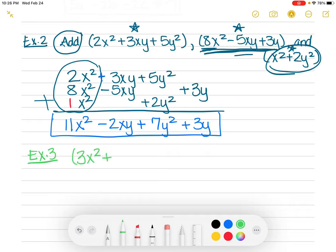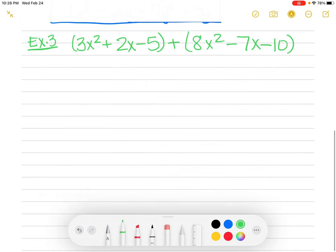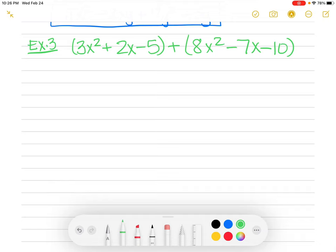3x squared plus 2x minus 5. And we're going to add to that 8x squared minus 7x minus 10. Again, make sure that you add up the like terms. The ones that are the same, add those up. So put them one on top of the other. Or you could just try to do it in your head if you think you can get that done. So hit pause and go ahead and solve that.